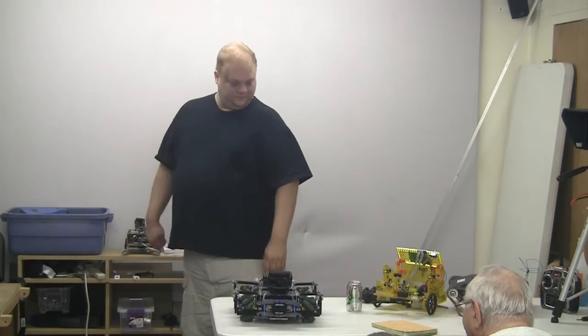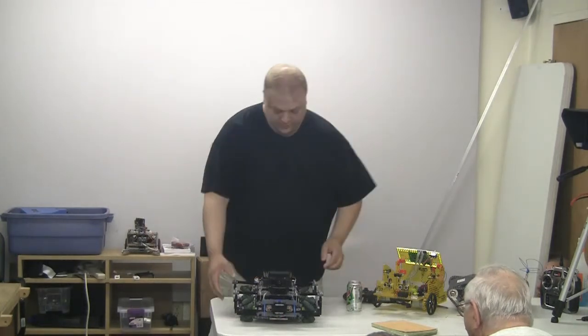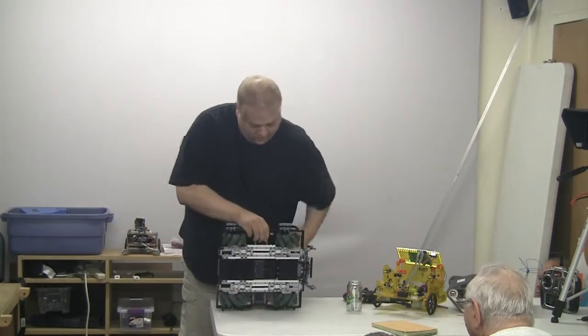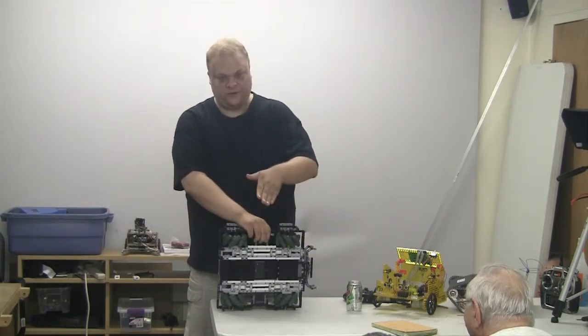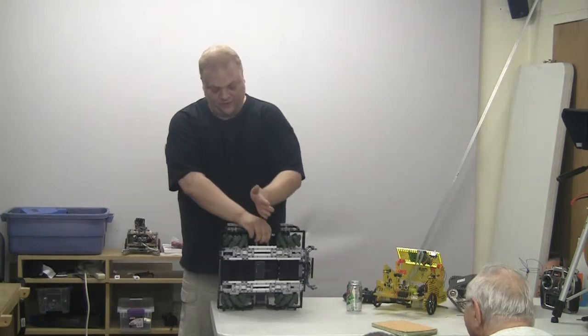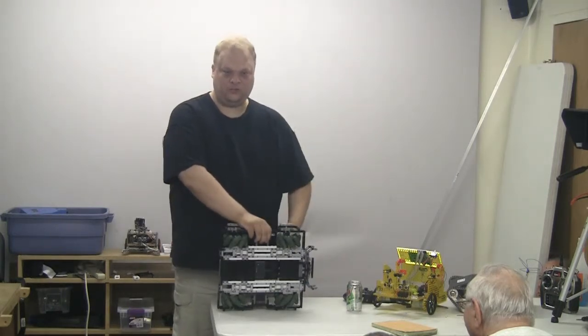How do you get it to go sideways? Well, each wheel here is at 45 degrees. So basically when it spins, it's going to want to push it at 45 degrees. So this 45, that 45 is going to go 90. And it's going to push it straight to the side.